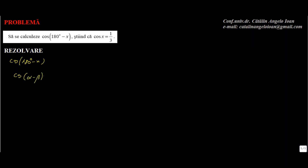Vă readuc aminte formula, care este egală cu cosinus de alfa ori cosinus de beta plus sinus de alfa sinus de beta. Prin urmare, cos de 180 minus x este cosinus de 180 ori cosinus de x plus sinus de 180 de grade ori sinus de x.